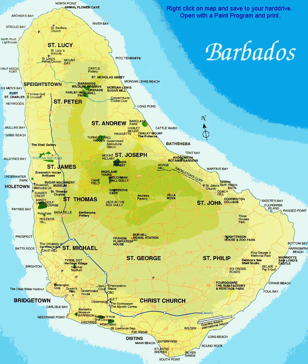Greetings my friends. This is a map of Barbados. Barbados is situated in the Atlantic Ocean, east of the other West Indies islands. Barbados is the easternmost island in the Lesser Antilles.